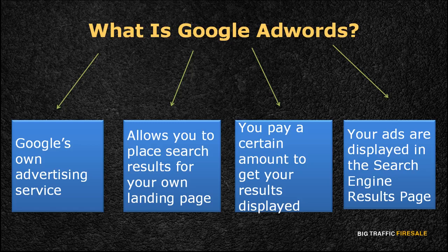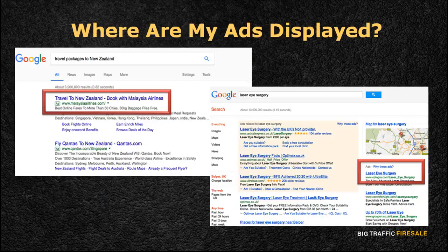Contrary to popular belief, the steps are actually quite simple and are not as pricey as some may perceive them to be. Where are your advertisements displayed and how are they displayed? As mentioned in the previous slide, your advertisements will be displayed on the SERP within the listings of the search engine. The SERP is the results page where users have typed their keywords for their search of interest in the Google search page beforehand.